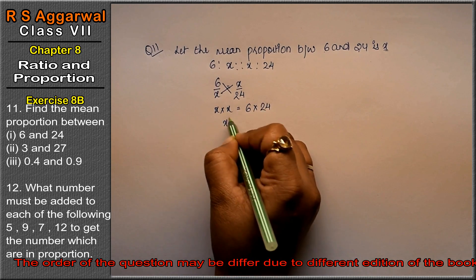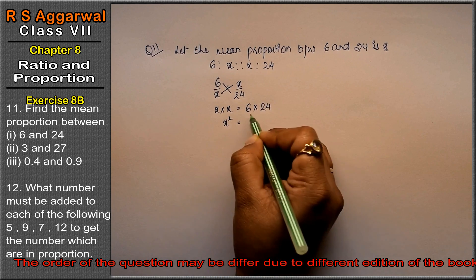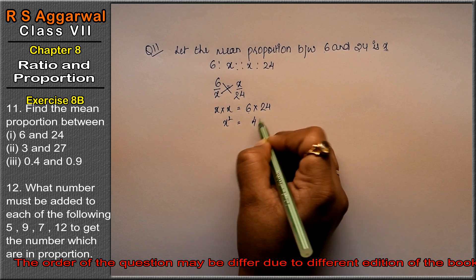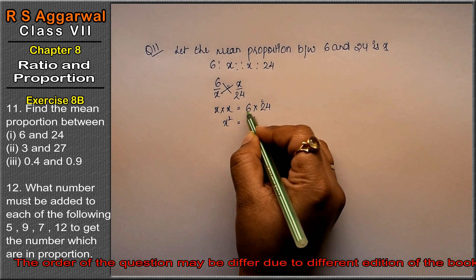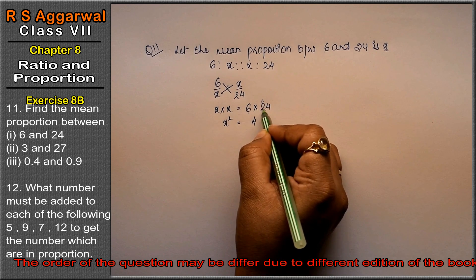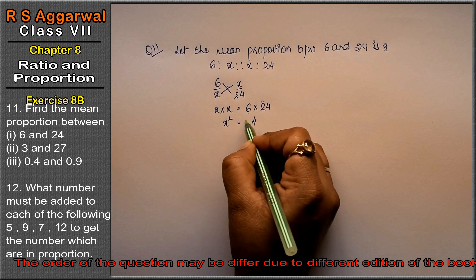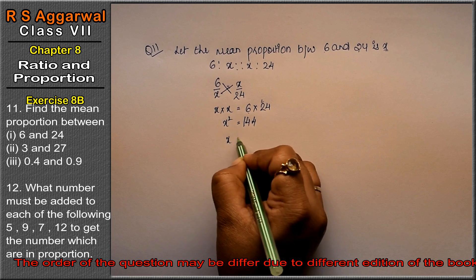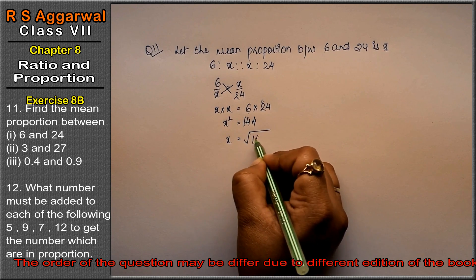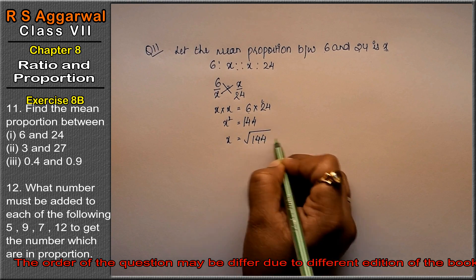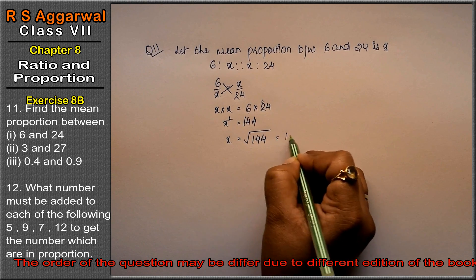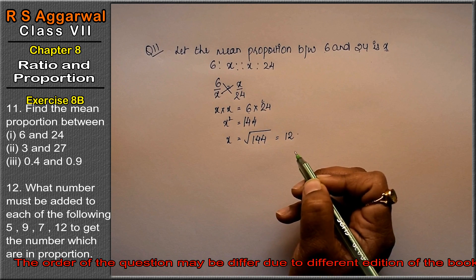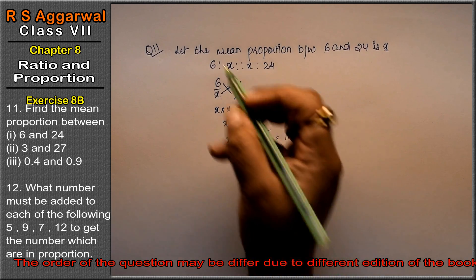So x squared equals 6 into 24, which is 144. Therefore x equals the square root of 144, that is 12. So the mean proportion between 6 and 24 is 12. This is our first part.